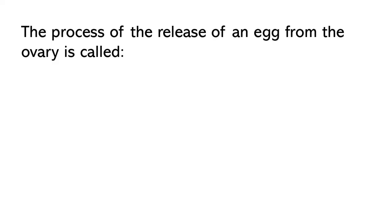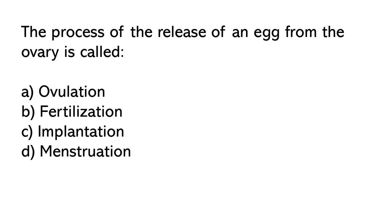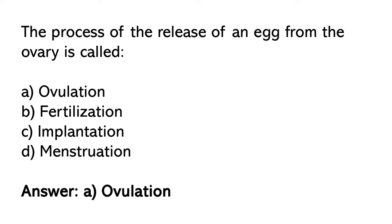The process of the release of an egg from the ovary is called: A) Ovulation, B) Fertilization, C) Implantation, D) Menstruation. So the correct answer is option A. Ovulation.